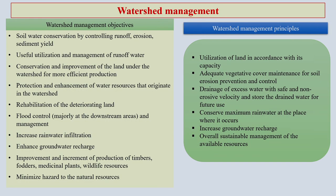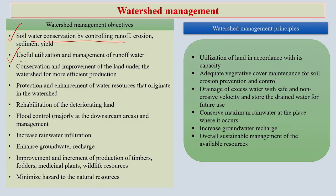To address these issues we need efficient watershed management. What are the watershed management objectives? First, soil and water conservation by regulating and controlling runoff and erosion — the two major problems that deteriorate watershed areas. Next, useful utilization and management of runoff water — the huge amount of water flowing out of the watershed needs to be managed properly. Conservation and improvement of land and water within the watershed for more efficient production.